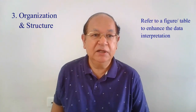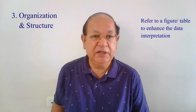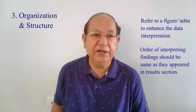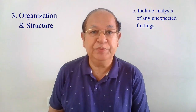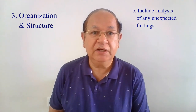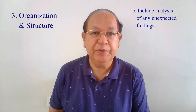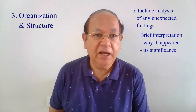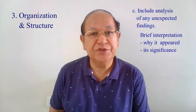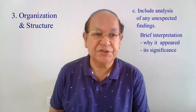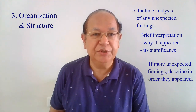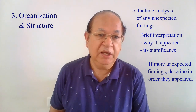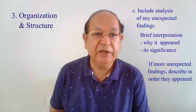Refer to a figure or table to help enhance the interpretation of the data. The order of interpreting each major finding should be the same order as they were described in your results section. A good discussion section includes analysis of any unexpected findings. This paragraph should begin with the description of the unexpected finding, followed by a brief interpretation as to why you believe it appeared and, if necessary, its possible significance in relation to the overall study. If more than one unexpected finding emerged, describe each in the order they appeared during the experimentation.